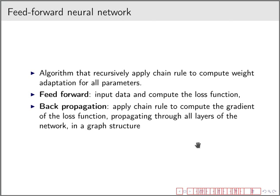How can I train that? We use the algorithm. Those networks are often called feed-forward neural networks. And there is an algorithm that recursively applies the chain rule from calculus to compute weight adaptation for all parameters. What is called feed-forward is basically to input the data and compute the loss function by multiplying everything and then summing everything and do all the transformations until we have the final result, the output. And then we do what is called back propagation. This is the chain rule that is applied in order to find the gradient with respect to the loss function. We use that gradient in the graph structure to propagate this gradient through all layers or all neurons and then adapting all of them.